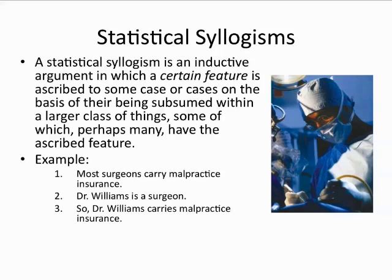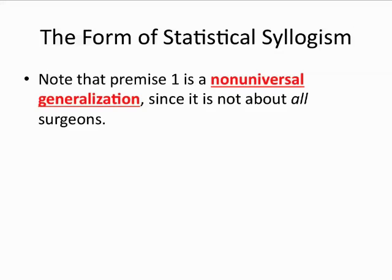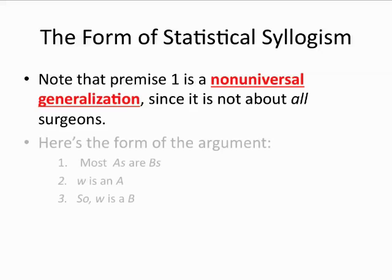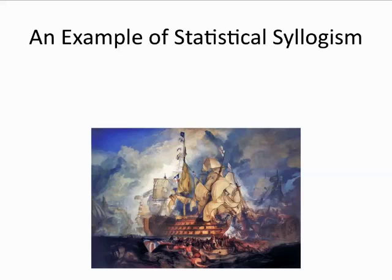As you can see, this is an induction — it is possible for the premises to be true and the conclusion false, so it's non-conclusive. The first premise uses the quantifier 'most,' so the statement is a non-universal generalization. If it said 'all surgeons,' it would be a universal generalization. The form of the argument is: premise one, most A's are B's; premise two, W is an A; conclusion, W is a B.